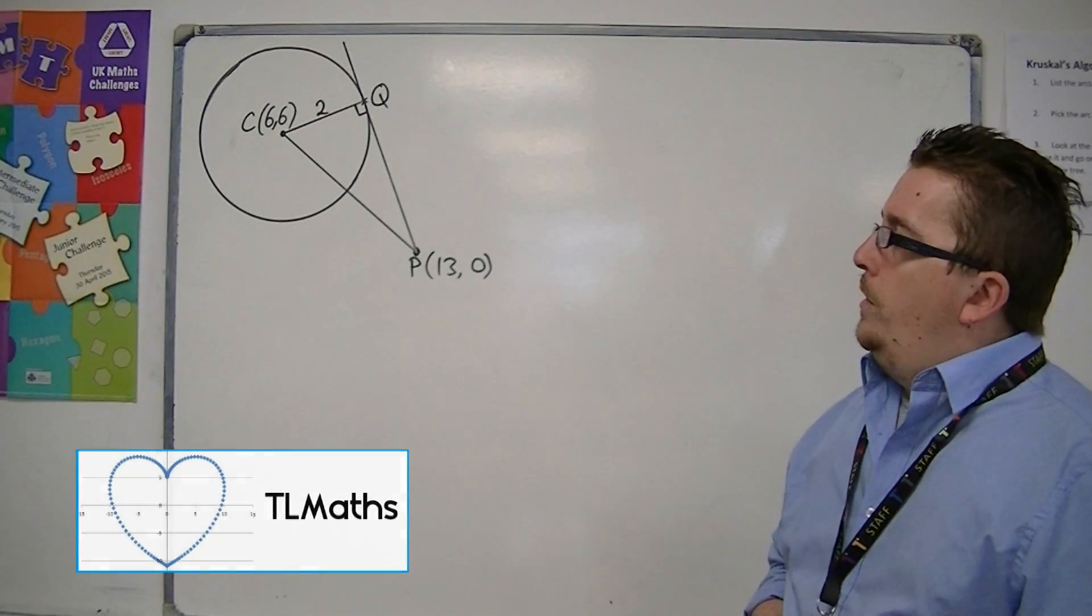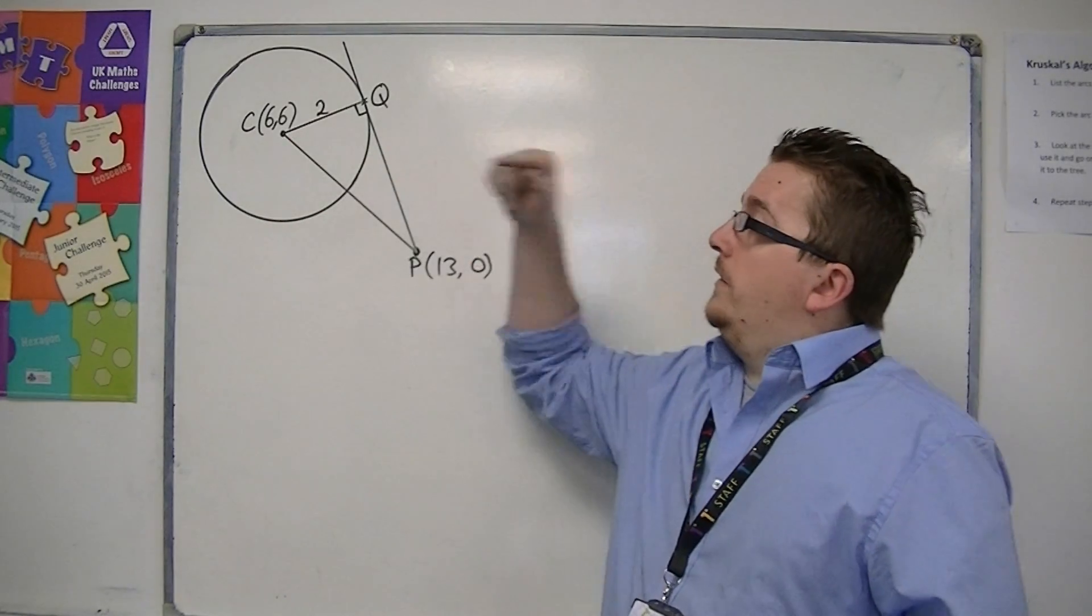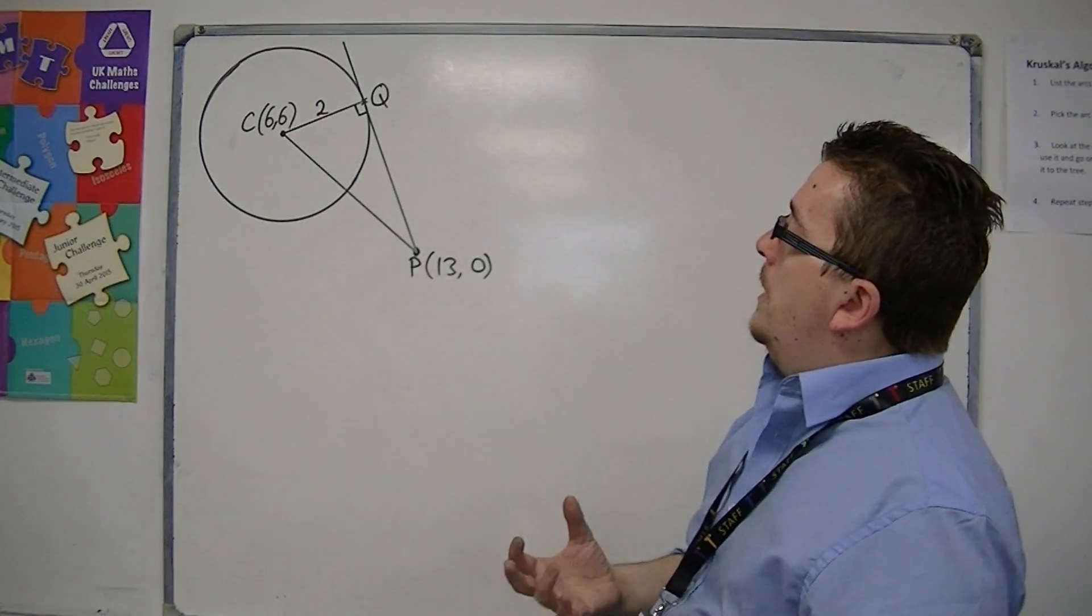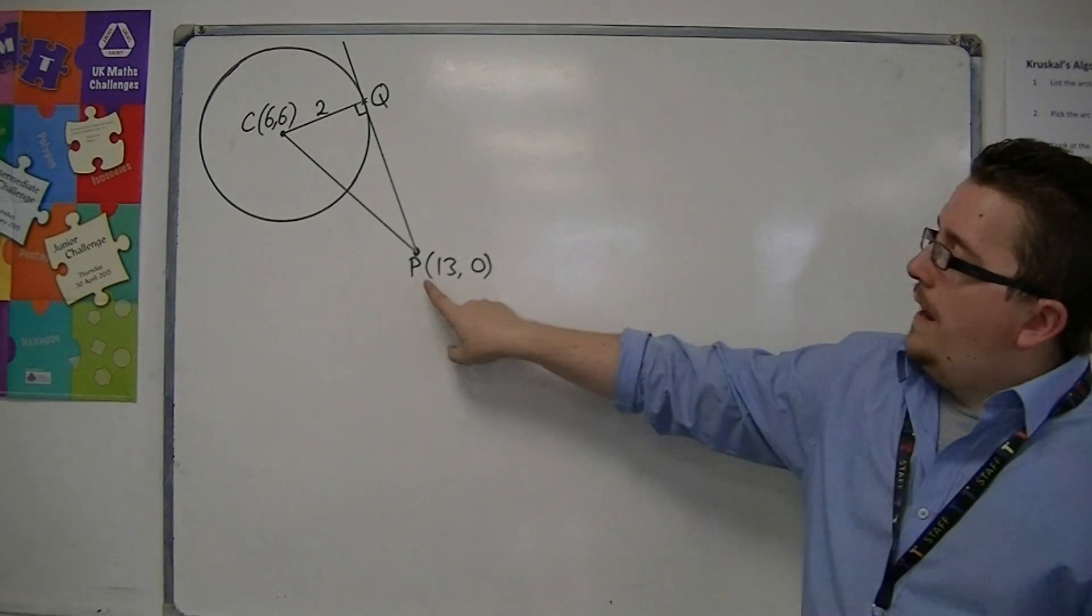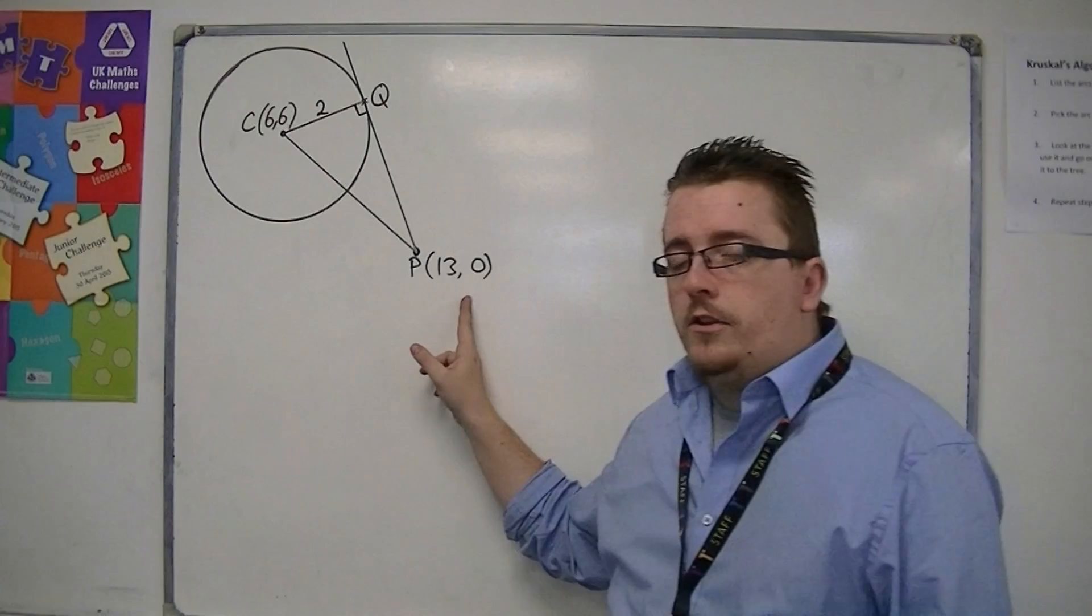In this problem, we're looking at a circle where we know the center at (6, 6) and the radius is 2. We have another point outside the circle called P, which is located at (13, 0).